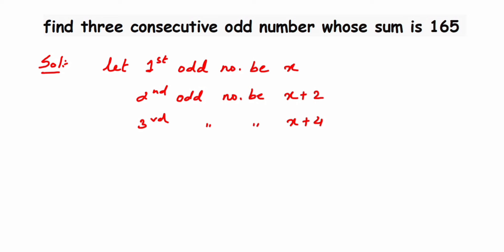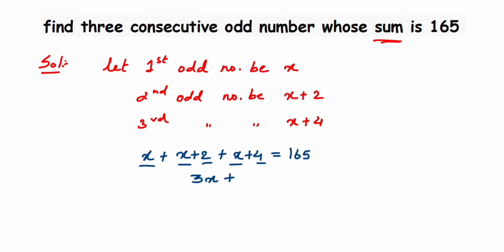The problem states that when we add all three numbers their sum is 165. So we form a linear equation: x plus (x plus 2) plus (x plus 4) equals 165. Adding the variables gives 3x, and adding the constants gives 2 plus 4 equals 6, so we get 3x plus 6 equals 165.